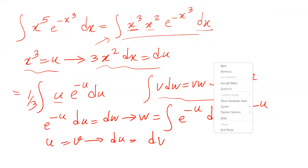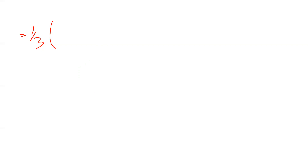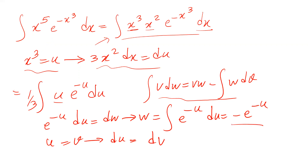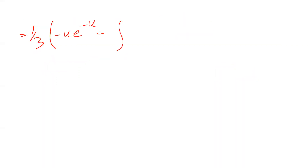So now using this formula, the result equals one-third times v·w. Since v was defined as u and w was calculated as minus e with the power of minus u, v·w equals minus u times e with the power of minus u, minus the integral of w dv. And w was minus e with the power of minus u, so this minus by that minus will be plus.